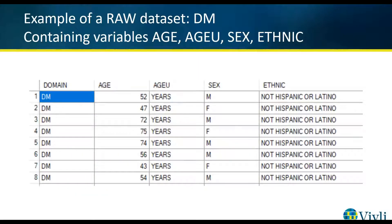Here is an example of a raw data set named DM. As you can see, it contains variables: age, age_u, sex, and ethnic.